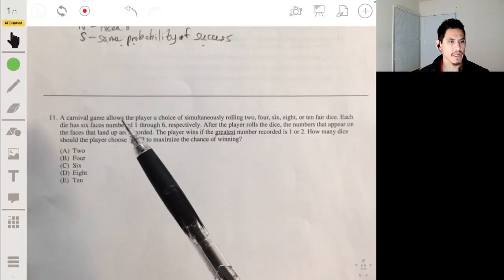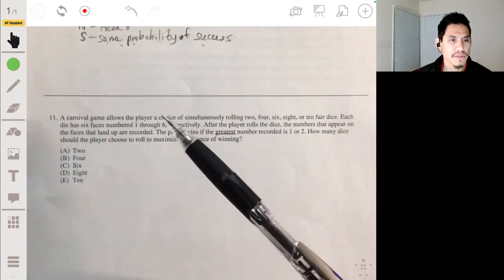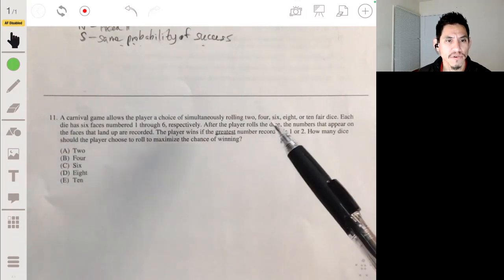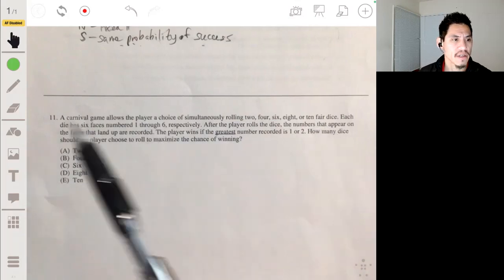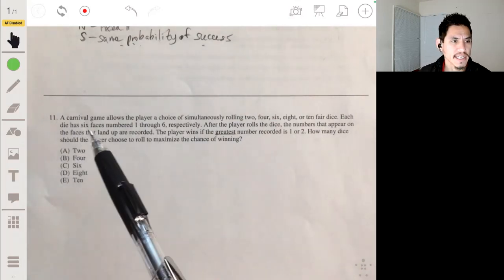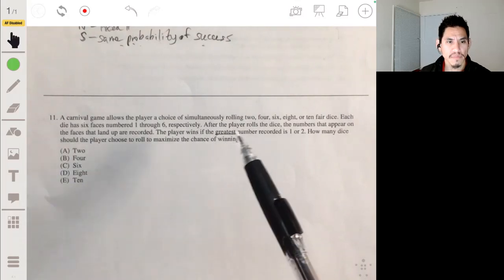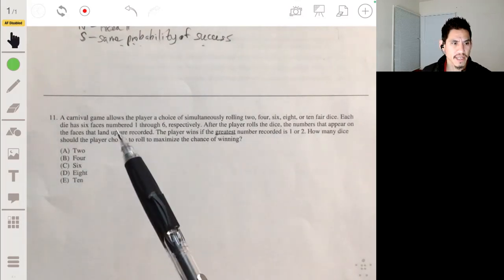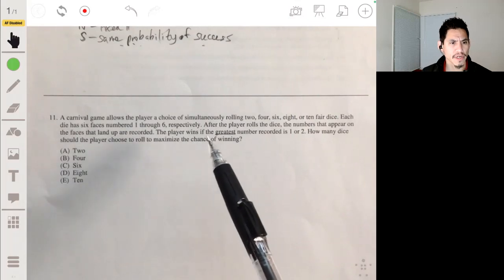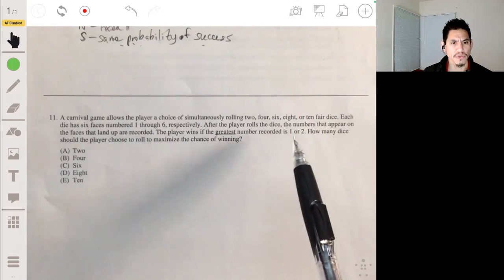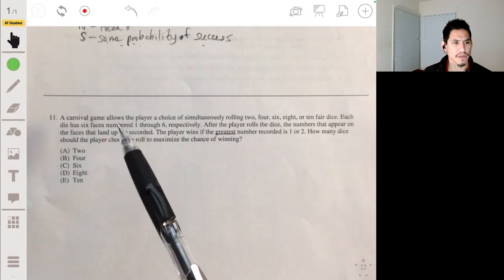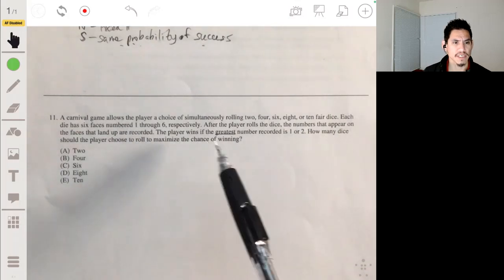Alright, problem 11. We have a carnival game that allows the player a choice of simultaneously rolling 2, 4, 6, 8, or 10 pair dice. Each die has 6 faces numbered 1 through 6 respectively. After the player rolls the dice, the numbers that appear on the faces that land up are recorded. The player wins if the greatest number recorded is 1 or 2.